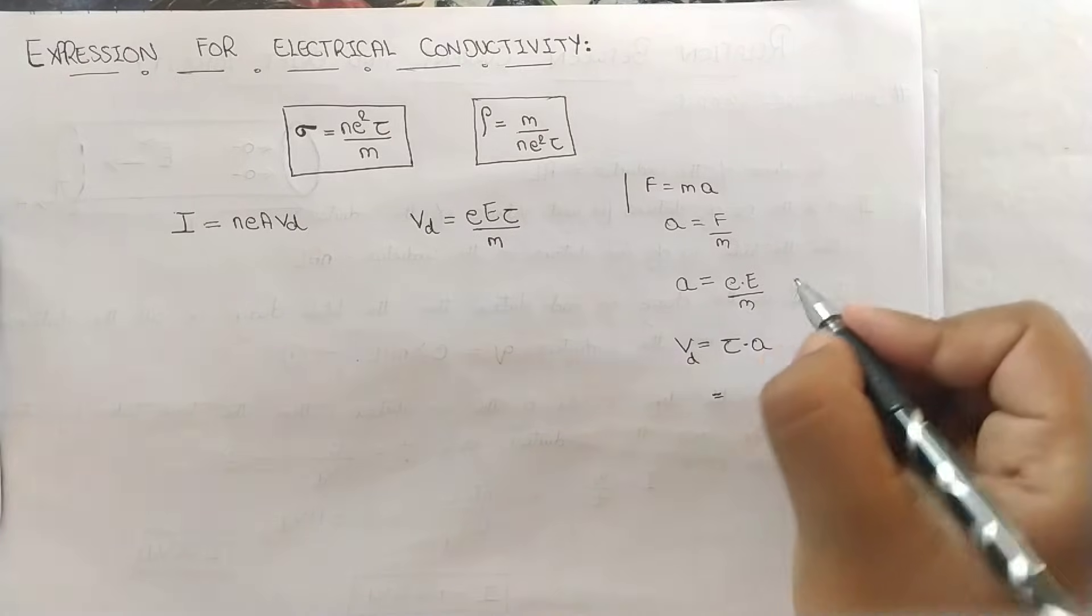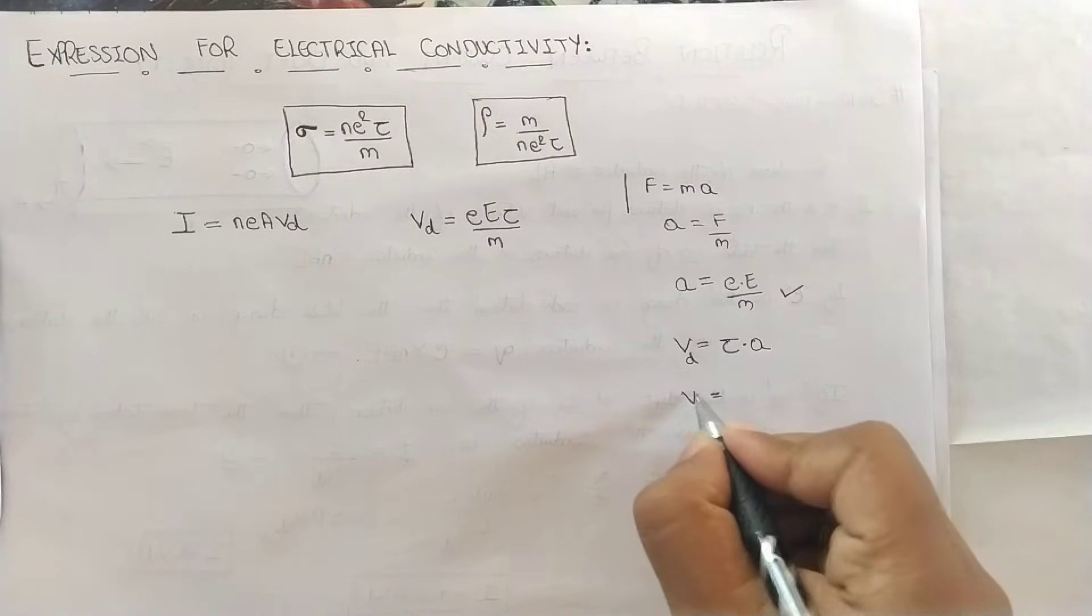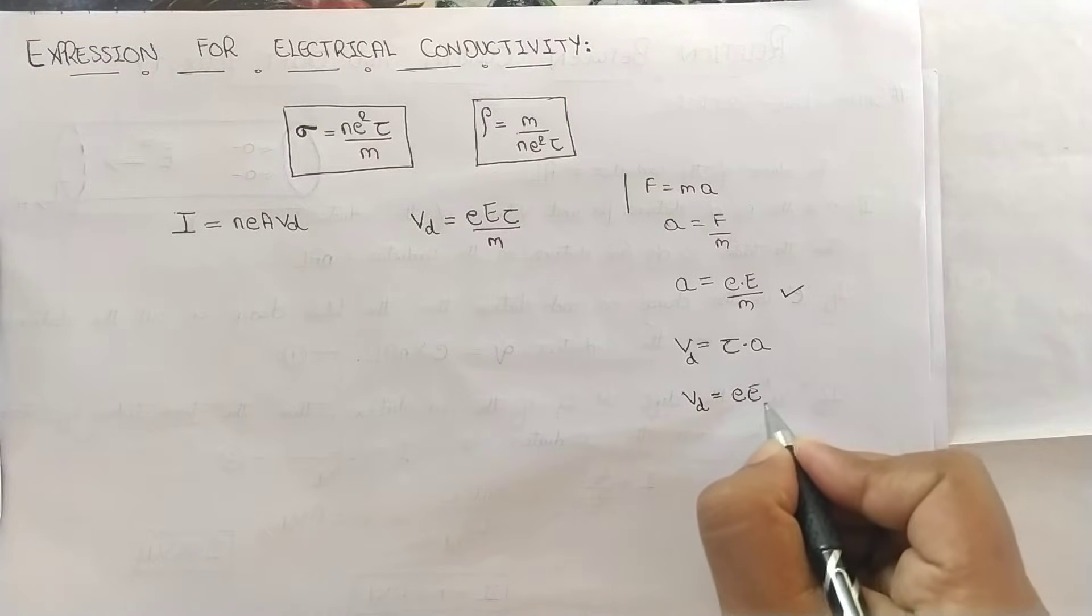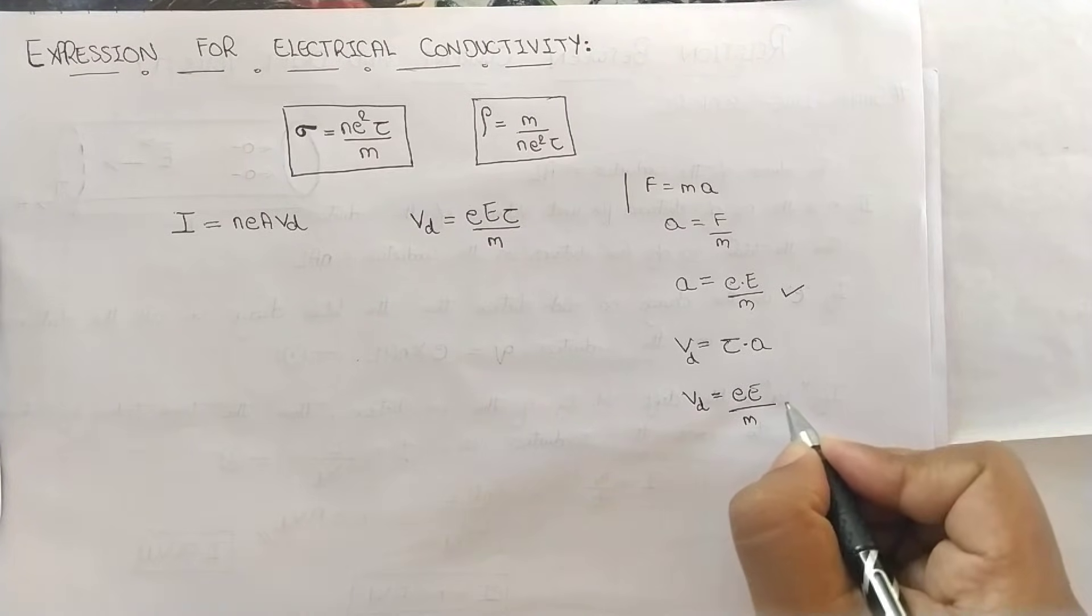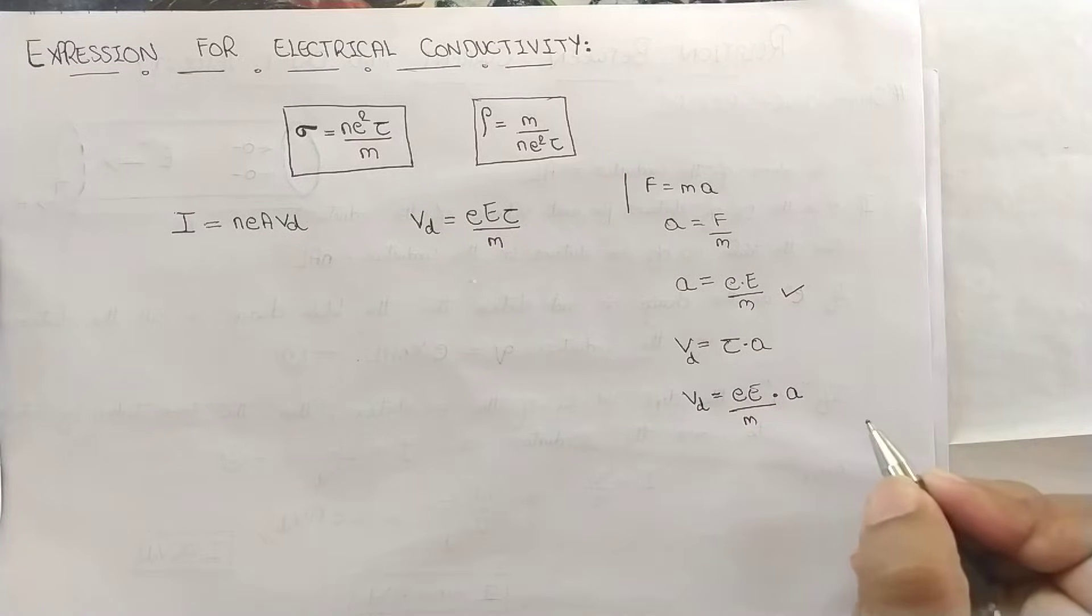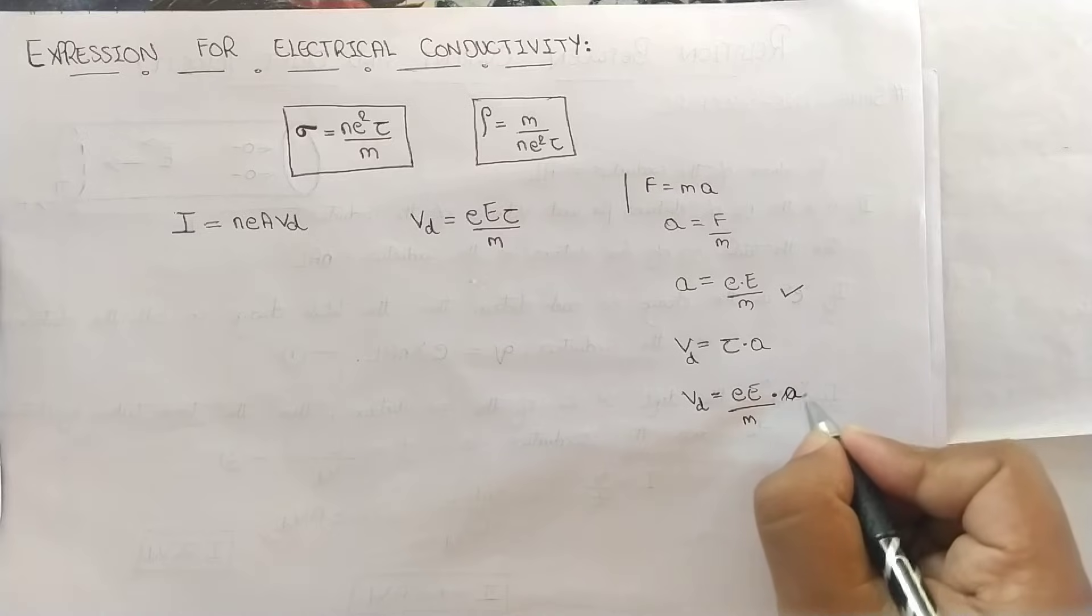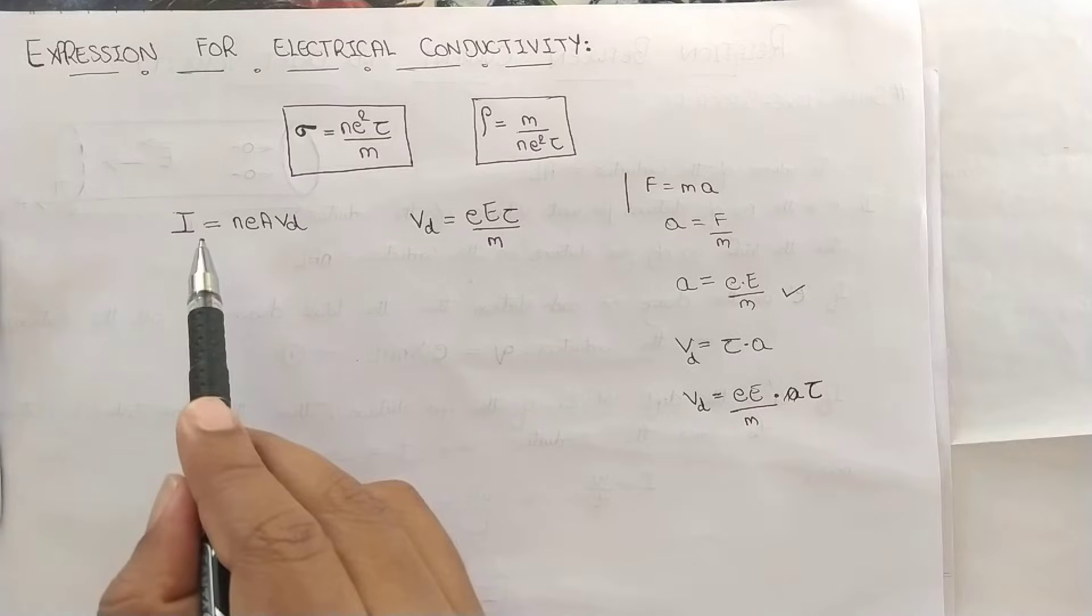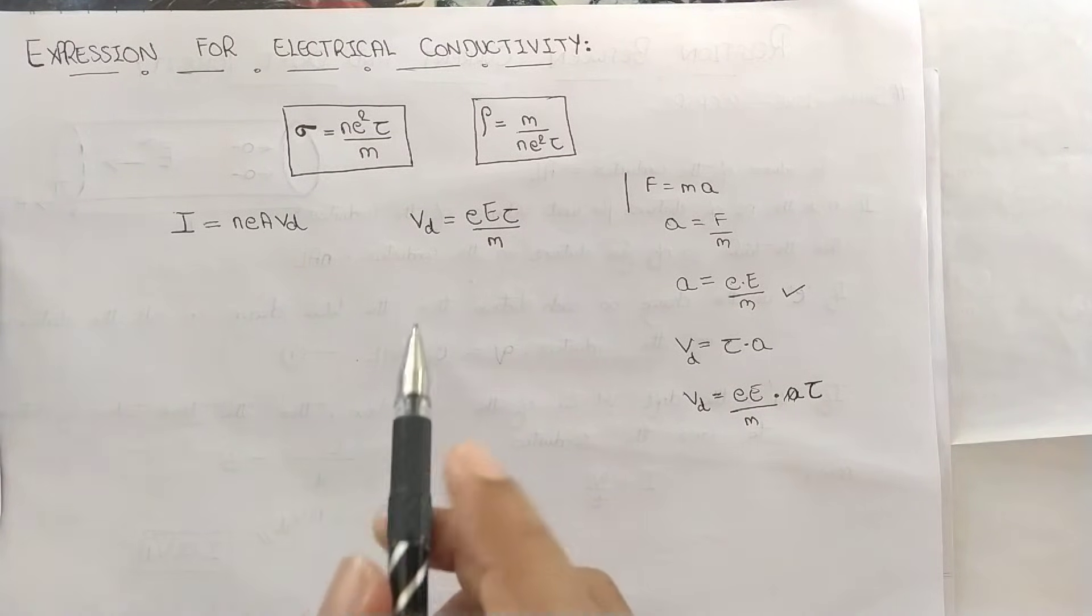As we know acceleration we obtained here, VD can be written as E multiplied by electric field applied over M multiplied by tau. This is the same equation I have considered here. And this is for current and this is for drift velocity VD.